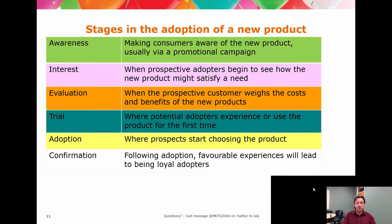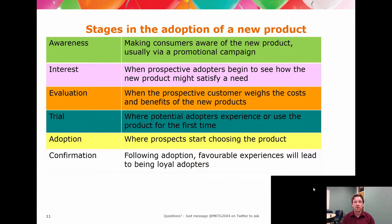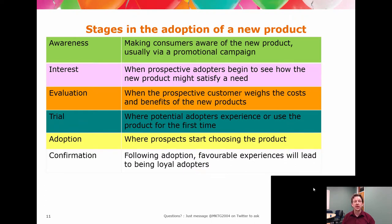Evaluation moves into the decision-making framework — looking at the relative advantage of this new product over existing behavior or doing nothing. Trial is where you actually give the product a go — this is the first form of adoption, but it does not necessarily guarantee a repeat purchase. Adoption is when you have repeat purchase, multiple uses of a product. Confirmation is when multiple use becomes loyal use. Marketing has different roles to play at each point in this framework — your role of price, distribution, and promotion changes through awareness, interest, evaluation, trial, and adoption. This is why the marketing mix needs to be worked on as a holistic.